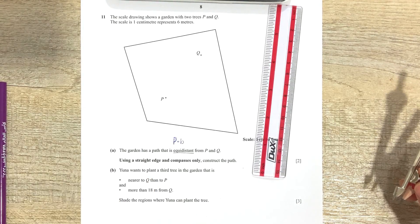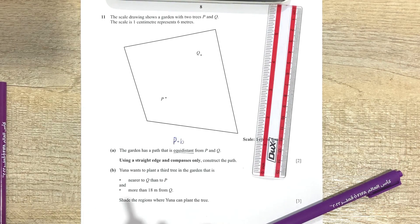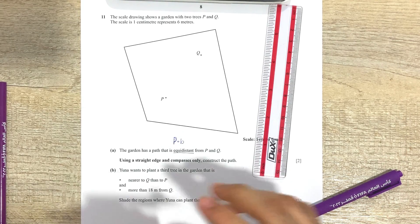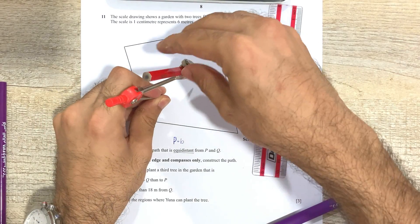Now what's going to decide what region is nearer to Q than to P? Well, for that we need to make a perpendicular bisector as I just suggested. Okay, so what we're going to do over here is we're going to make a perpendicular bisector.